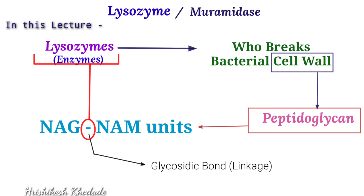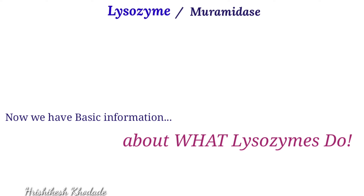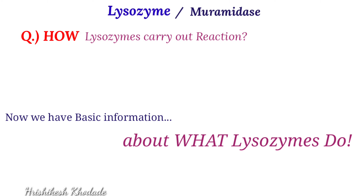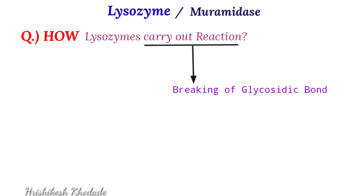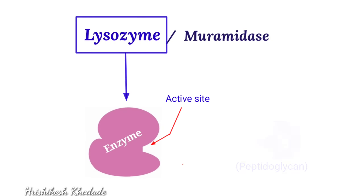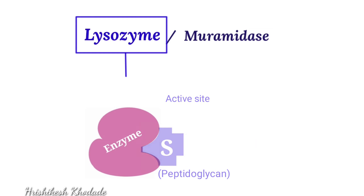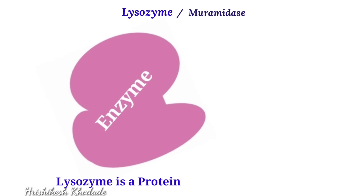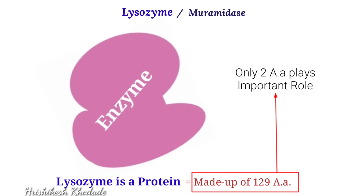The glycosidic bond is the target of the lysozyme enzyme. Now that we understand what lysozyme does, it is time to see how lysozymes are capable of performing this type of reaction — breaking glycosidic bonds. For that, we need to know about the active site of lysozyme, which is the area where the substrate binds. Lysozyme is a protein made up of 129 amino acids.